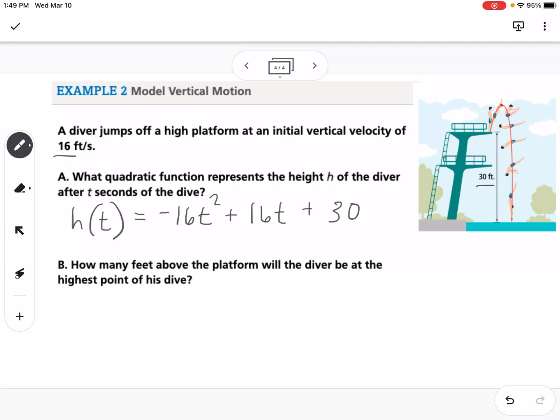So then it says, how many feet above the platform will the diver be at the highest point on his dive? So we want to find the vertex of the parabola, so we know that the vertex is going to be x equals negative b over 2a. That's our x coordinate, and then we can find our y by plugging that back in. So that would be negative 16, because that's our b, over 2 times negative 16, which is our a. So that would become 1 half.